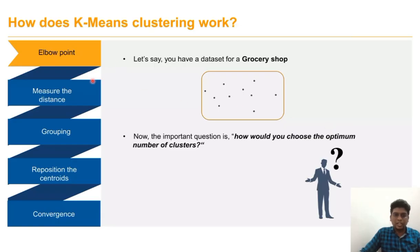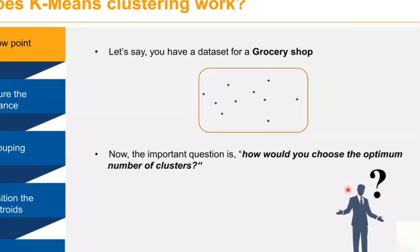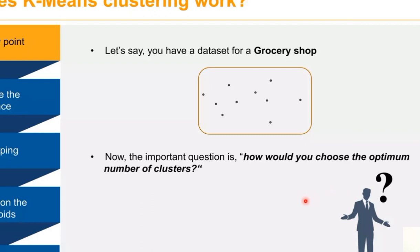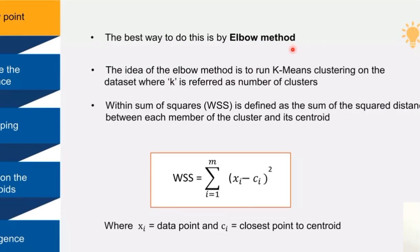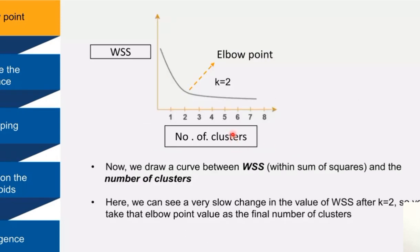What do you mean by that elbow point? Suppose we have a data set for a grocery shop. The important thing to be noted is how we can choose the optimum value for a cluster. Elbow point helps to find the optimum value of the clusters. WSS defines the within sum of squares, which means it is the sum of square distance between each member of the cluster and its centroid. This is how elbow point is measured.